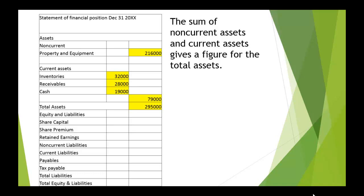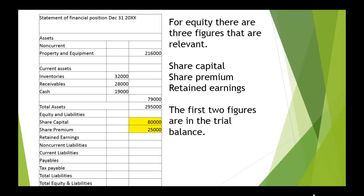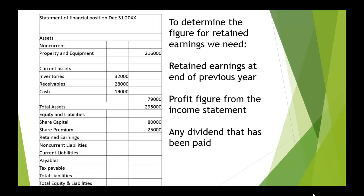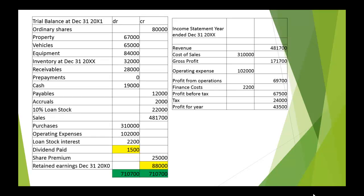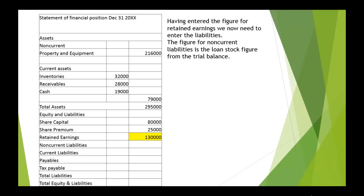For equity, there are three figures that are relevant: share capital, share premium, and retained earnings. We've got the share capital and share premium from the trial balance — 80,000 and 25,000. For the retained earnings, we need the retained earnings at the end of the previous year, plus the profit figure from the income statement, and we need to subtract any dividend that's been paid. The retained earnings at the start were 88,000, plus the profit for the year of 43,500, subtract the dividend paid of 1,500, giving us retained earnings of 130,000.